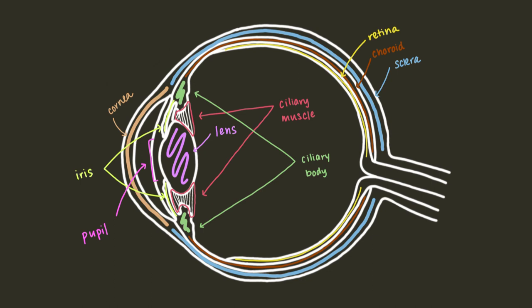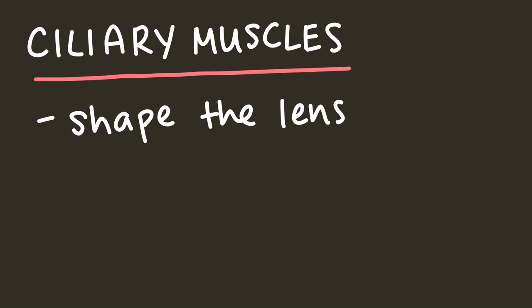Towards the front of the eye, the choroid morphs into the ciliary body, which houses the ciliary muscles. These are the muscles that determine the shape of the lens.